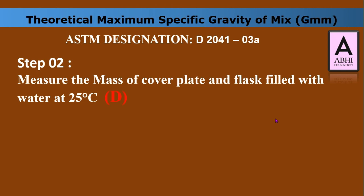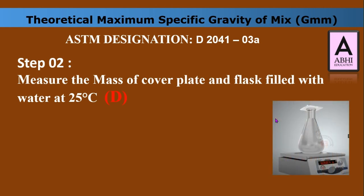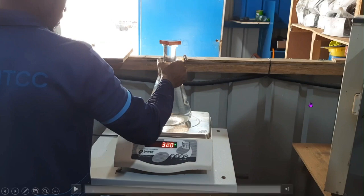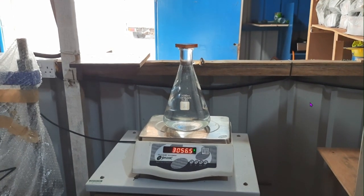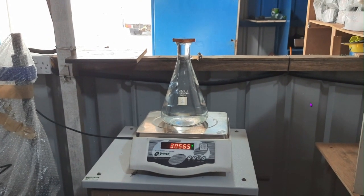Step two: measure the mass of the cover plate and glass filled with water at 25 degrees Celsius. We record this measurement as weight D. In this example, this weight is 3056.5 grams.